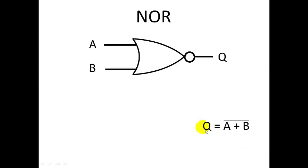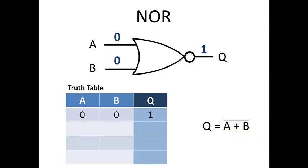So our algebraic notation, Q, the output, is equal to A or B inverted. So this is called A NOR B. So when we have a 0, 0 input, we get a 1 output.